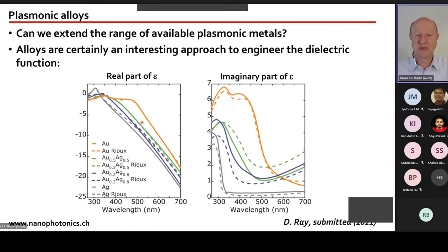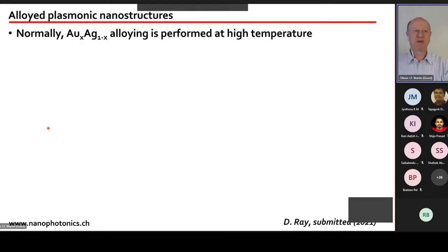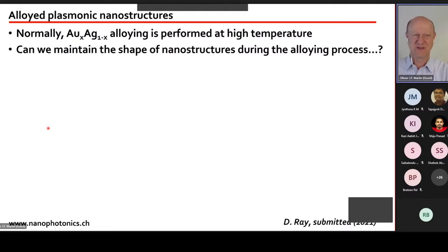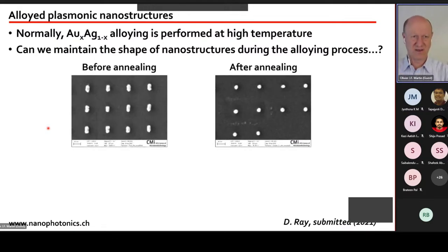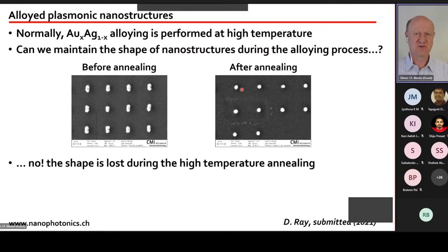If you make a 50-50 gold-silver alloy, you get a permittivity partway between them. With a 20% gold / 80% silver alloy, you get yet another value. So by tuning stoichiometry, you can vary the frequency of the plasmonic effect. However, alloying normally requires high temperature, which destroys nanostructure shapes — as we found when a small bar alloyed at high temperature just turned into a small blob.